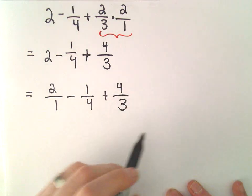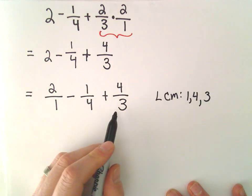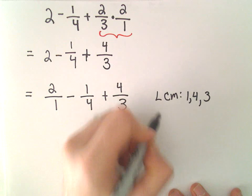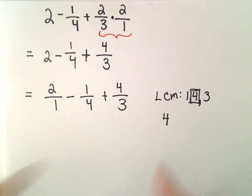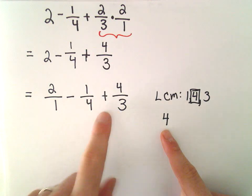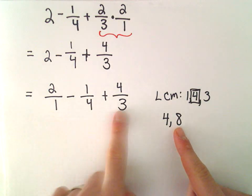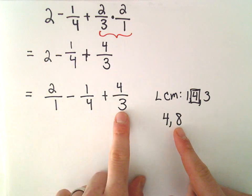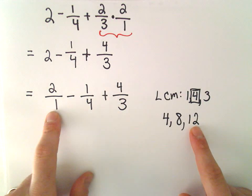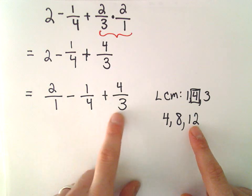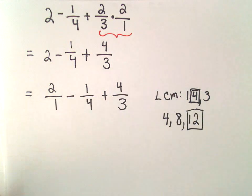What's the least common multiple of 1, 4, and 3? I'm looking at the denominators. I pick out the largest denominator, which is 4, and start looking at multiples of 4. Clearly 4 won't work as a common denominator. The next multiple is 8 — no, because 3 won't go into it. The next multiple is 12. Well, 1 doesn't matter, 4 clearly goes into 12, and 3 also goes into 12. So I need to make my denominator 12.